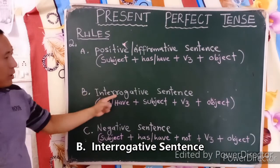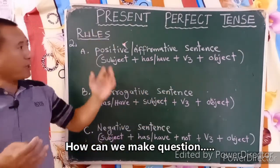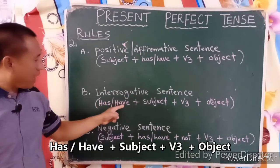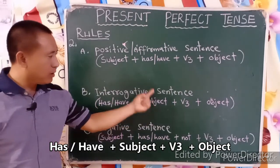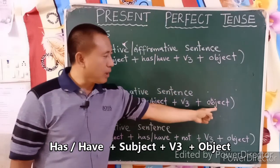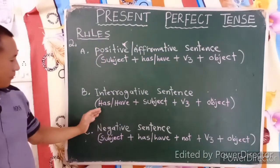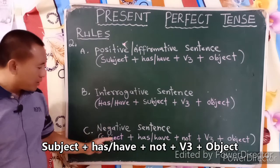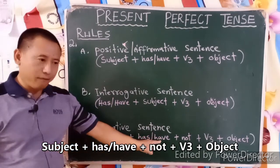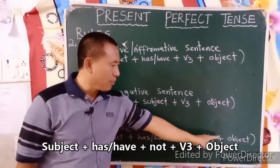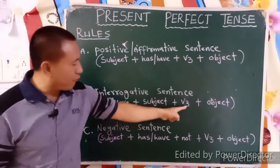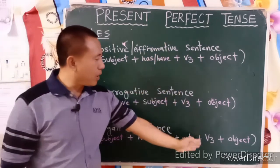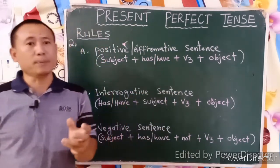For an interrogative sentence, the question structure is: Has or have comes first, then subject, then V3, then object. For a negative sentence, the structure is: Subject, then has or have plus not, then V3, then object. Notice that in all Present Perfect Tense sentences — whether affirmative, questions, or negative — we always use V3, the past participle verb form.